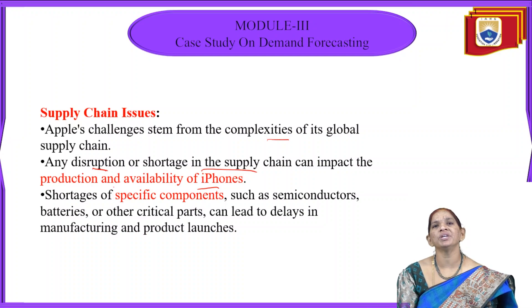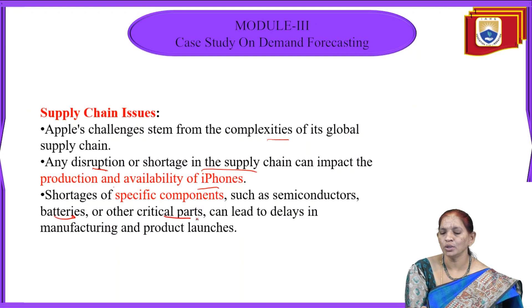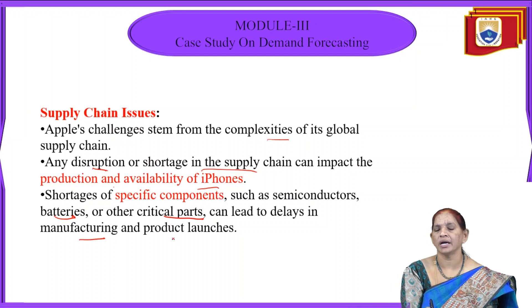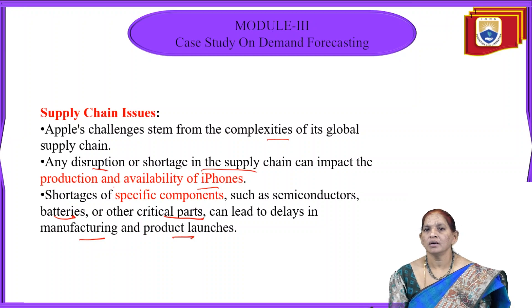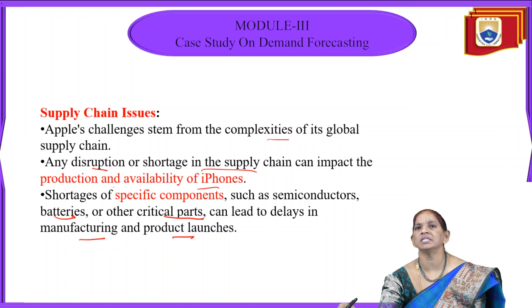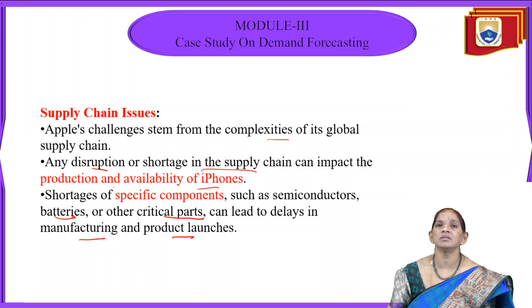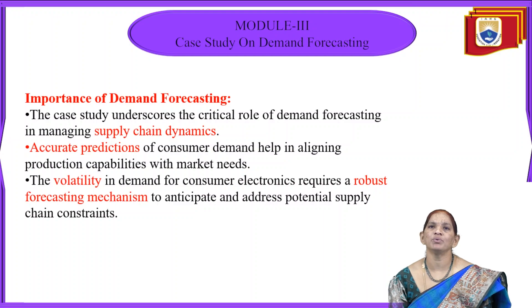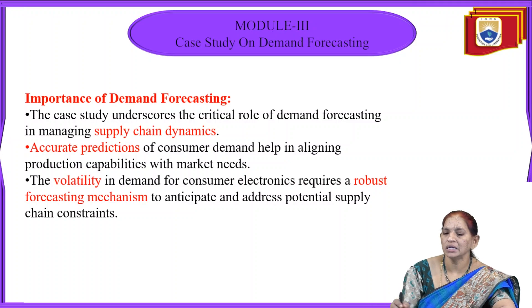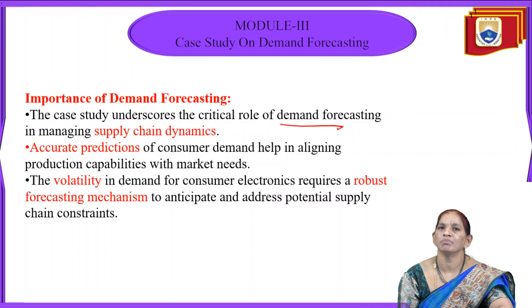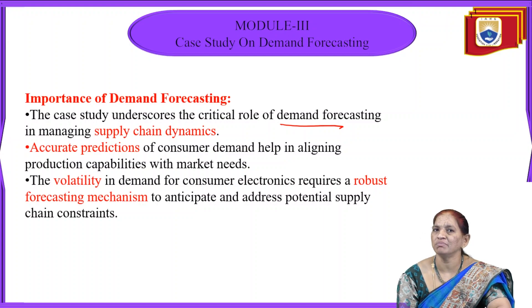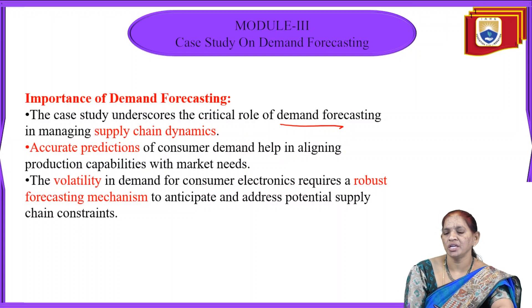Specific components required in the iPhone, such as batteries and other crucial parts, also led to delays in manufacturing and product launches. The shortage of internal raw materials like batteries and accessory parts took a lot of time for the company to launch its product or adjust its distribution network. With this, the importance of demand forecasting gained prominence. This case itself underscores the critical role of demand forecasting in managing supply chain management, as there were many enquiries and rush for the product yet adequate components were not being produced.